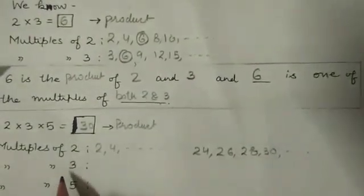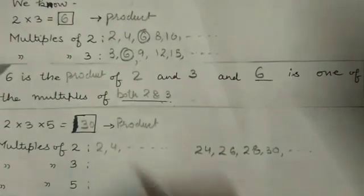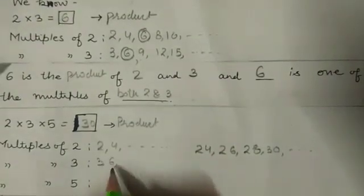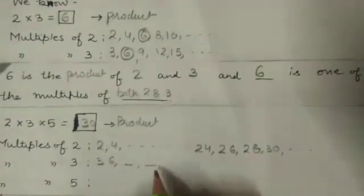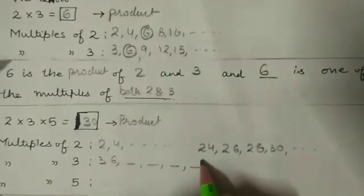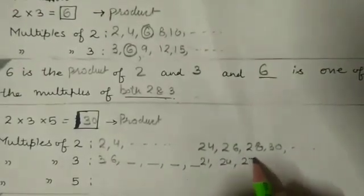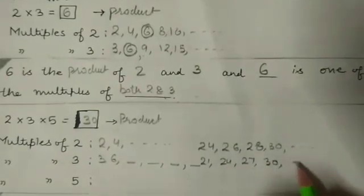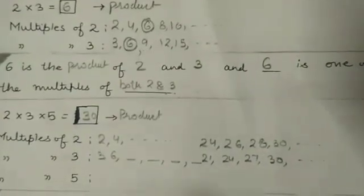Now let us write the multiples of 3: 3, 6, 9, 12, 15, 18, 21, 24, 27, 30 and so on. Again I tried to get the multiples of 3 here also.